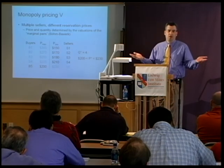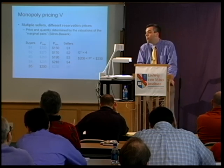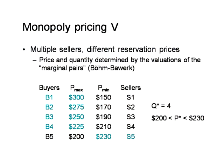What if you have multiple sellers each with different reservation prices? Now we're back to the analysis of marginal pairs. This is the same example we looked at originally: bilateral competition — competition among buyers and among sellers. There will be four transactions, and the equilibrium price lies above the reservation price of the first excluded buyer B5 and below the reservation price of the first excluded seller S5.